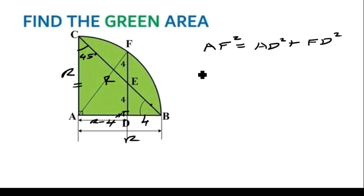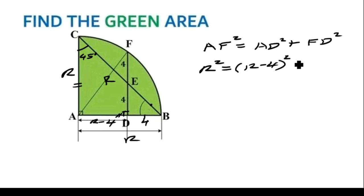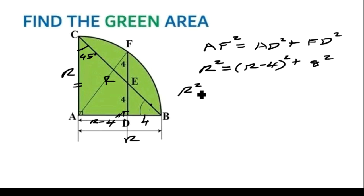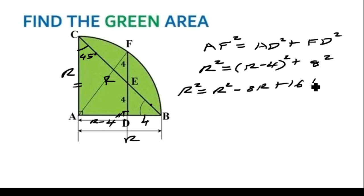The length A to F is the radius R, so R squared equals AD squared plus FD squared. From A to D we found was R minus 4, so that is R minus 4 all squared. Then from F to D is 4 plus 4, which is 8, so FD squared is 8 squared. Opening the bracket, R squared equals R minus 4 squared, which expands to R squared minus 8R plus 16, then plus 8 squared.